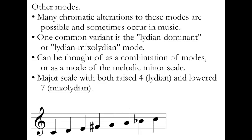There do exist other sorts of modes. A lot of chromatic alterations to these modes are possible and can occur in music, and there are a lot of different imagined combinations of these modes that we can find. So don't be alarmed if you see a scale being used in a piece that is not one of these modes — that's not too uncommon. I will list one common variant here, which is the Lydian dominant mode, or the Lydian Mixolydian mode. It can be thought of as a combination of modes, or as a mode of the melodic minor scale. We can imagine this as a mixture of our Lydian mode, which has a raised fourth scale degree, and a Mixolydian mode, which has a lowered seventh scale degree. We can see both of those in our C Lydian Mixolydian scale here: the raised fourth, F sharp, and the lowered seven, B flat. We can also think of this as a mode of G melodic minor — the G melodic minor scale with C as its pitch center.